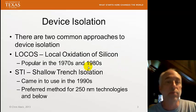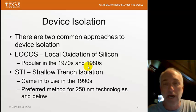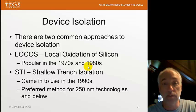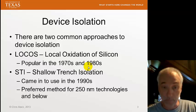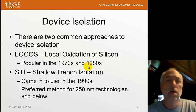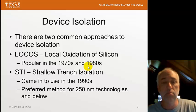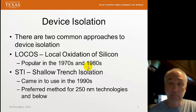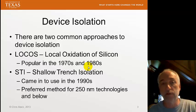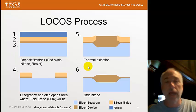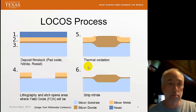There are two common approaches to device isolation today. One is the older approach — LOCOS, the local oxidation of silicon. It was popular in the 70s and 80s and very widespread in MOS devices. But around 1990, in the late 80s and early 90s, it was replaced by shallow trench isolation, which has been the preferred method since the 250 nanometer technology generation — roughly the mid-90s timeframe. Both are still in use today; we're going to study LOCOS for its historical significance and to point out the differences between a LOCOS system and an STI isolation system.